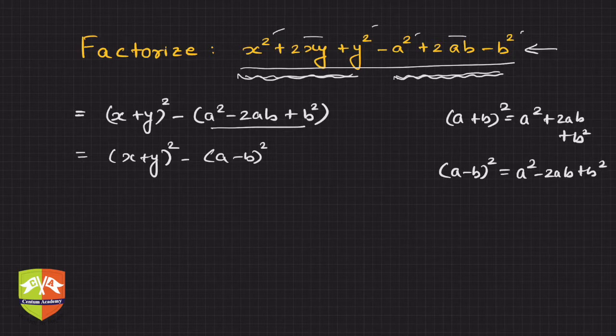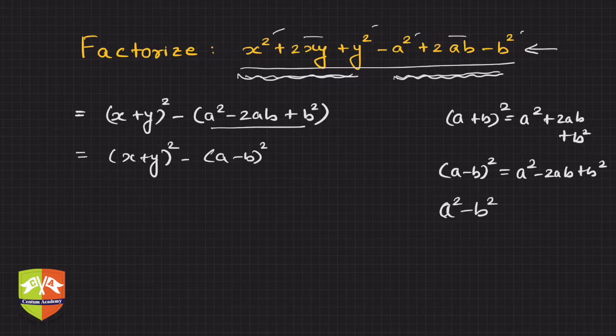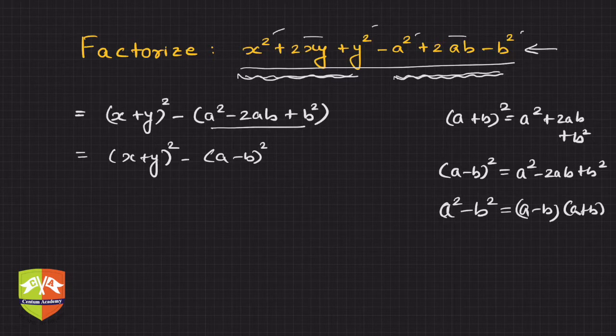And this is going to give us some advantage. And if you see, we are going to use this as well: a² - b² = (a - b)(a + b).